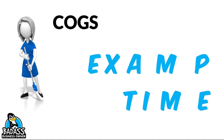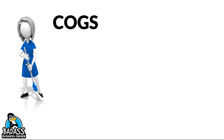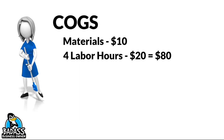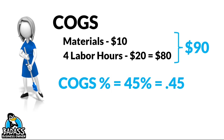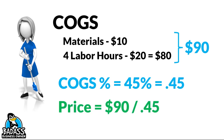Let's do an example. Say you have a cleaning business bidding on a house. Your materials will run about $10, and you have four labor hours at $20, which is $80 in labor wages — so your total cost of goods is about $90. Now here's where the percentages come in. Your cost of goods percentage is 45%, or 0.45. Take $90 and divide it by 0.45, and that tells you your price needs to be at least $200 to hit your profit goal. If you're below that, you'll miss it; above that, you add more profit.